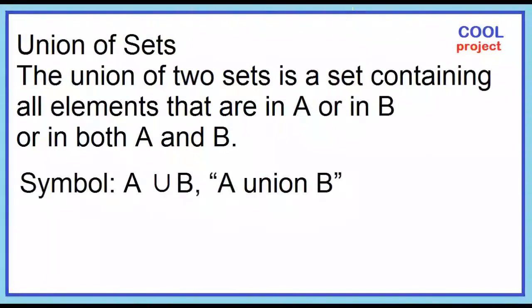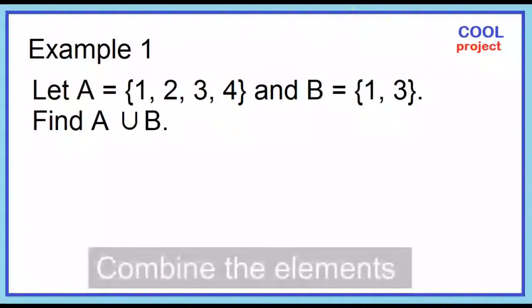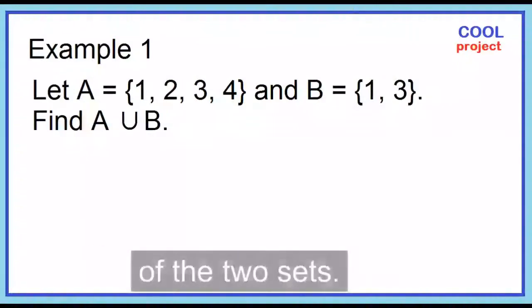This is the symbol of A union B. Example number 1: Given set A and set B, find A union B. Combine the elements of the two sets.